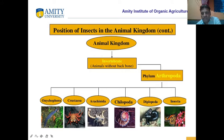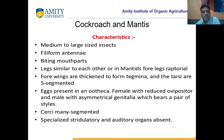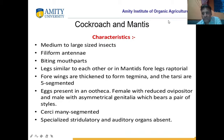So again we classify — where is the position of Arthropoda? Arthropoda belongs to animal kingdom, invertebrates, phylum Arthropoda, and the class Insecta, and Dictyoptera. We will study the characteristics. They are medium sized. They have thread-like filiform antenna. They have chewing and biting type mouthparts. In mantis, the four legs are raptorial.